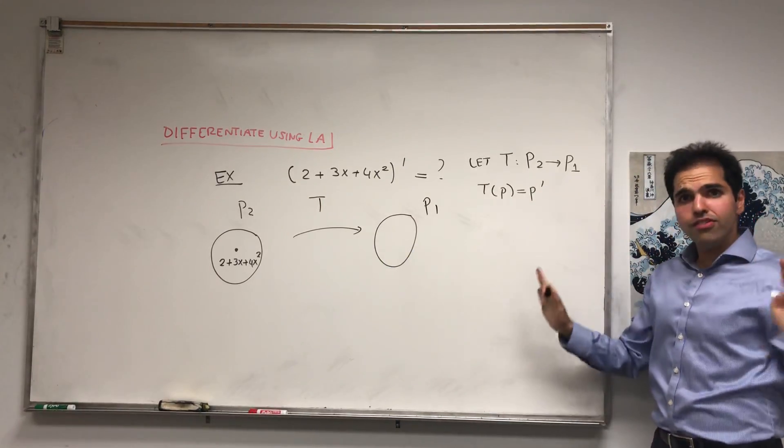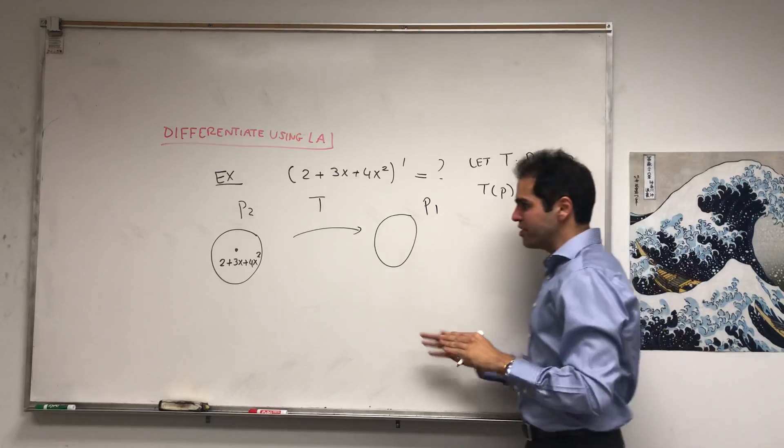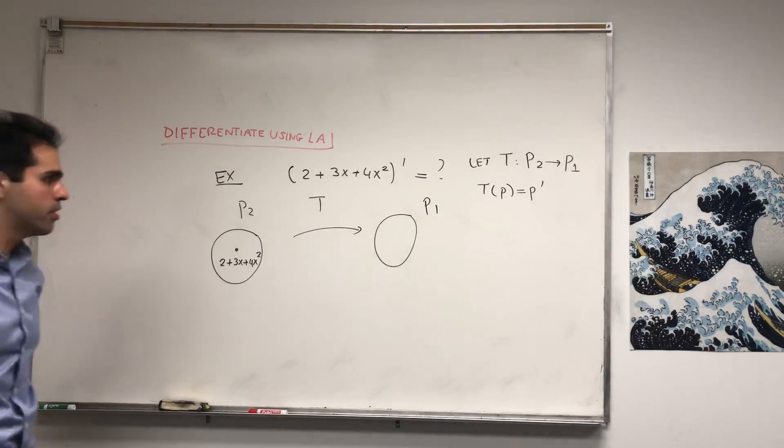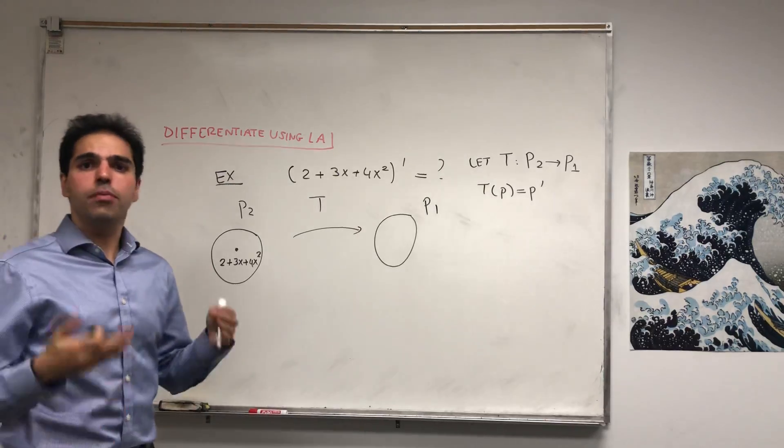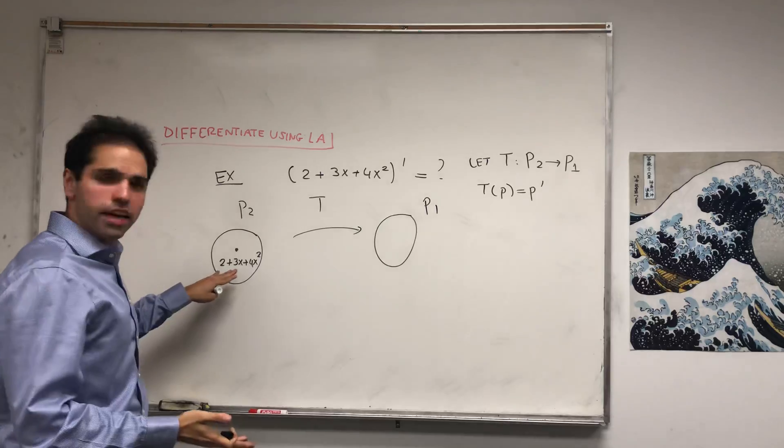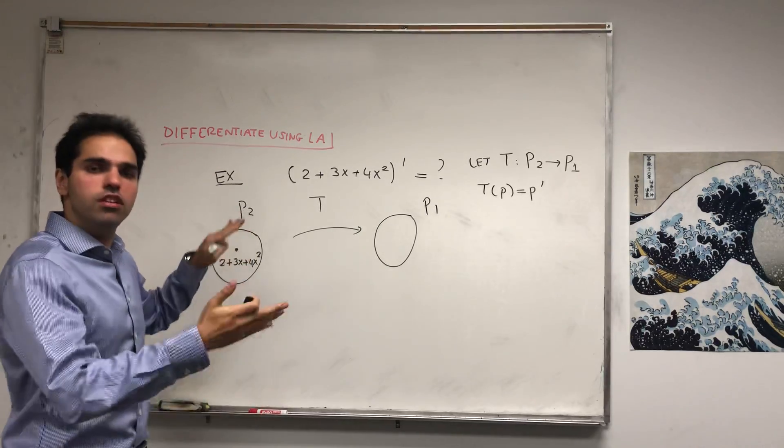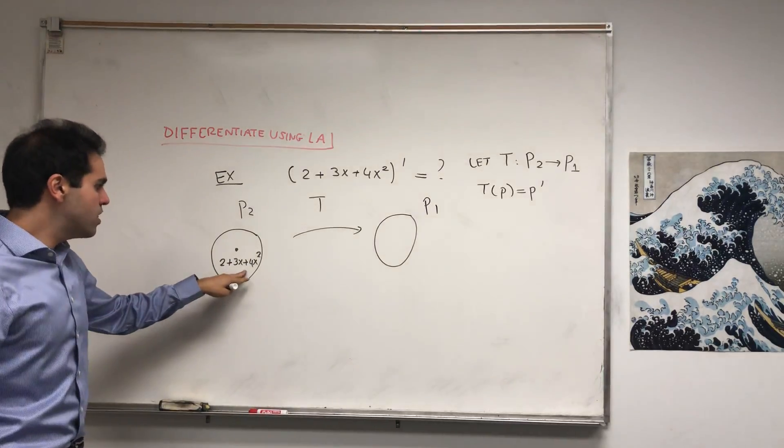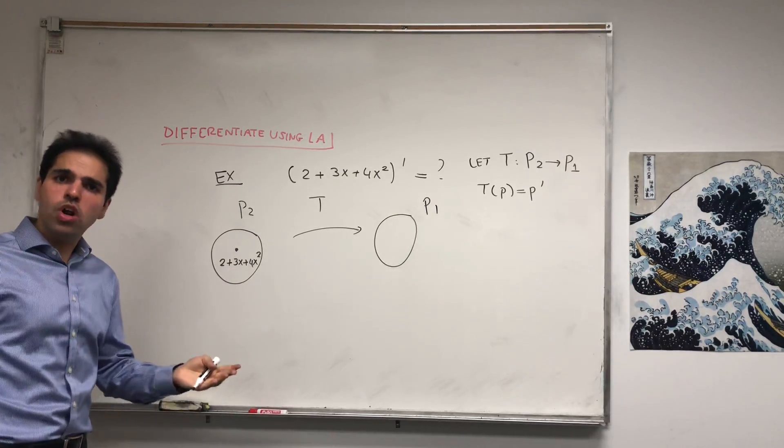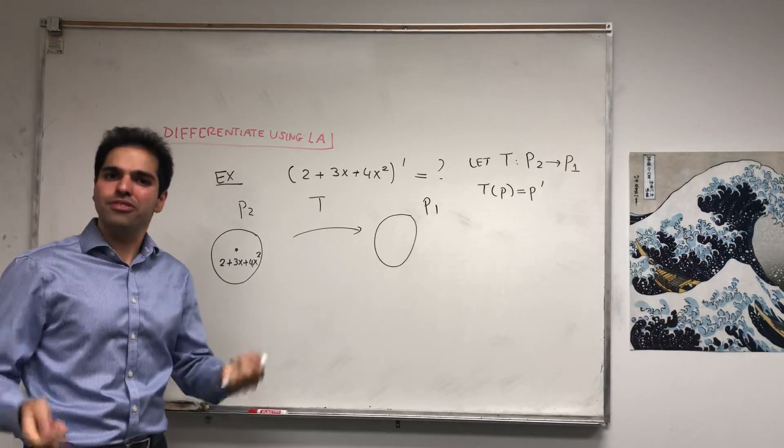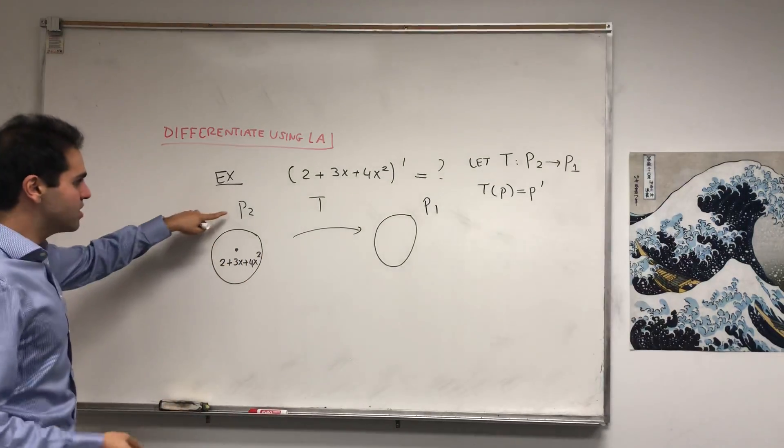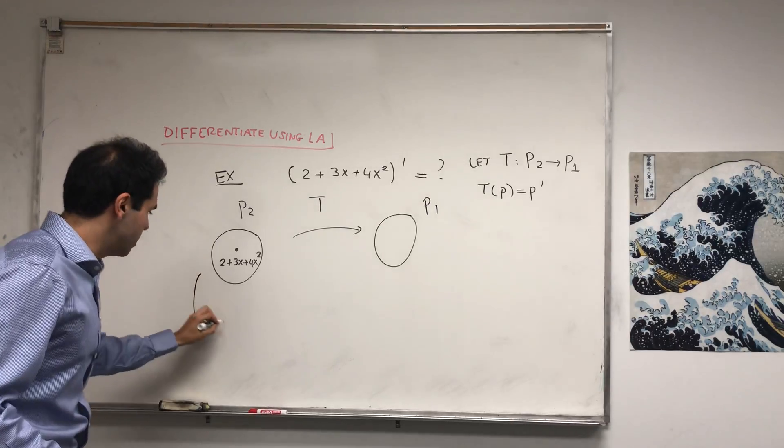And again, this is a very abstract thing. So we start from our input, and we want to get our answer, which is the output. The beautiful thing about linear algebra is that it allows you to go from the abstract to the very concrete. So this is a very abstract polynomial. What we do know are lists of numbers. We are way more familiar with R3, so let's go from P2 to R3.